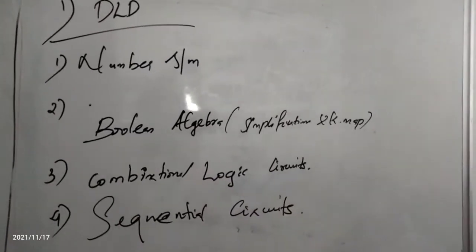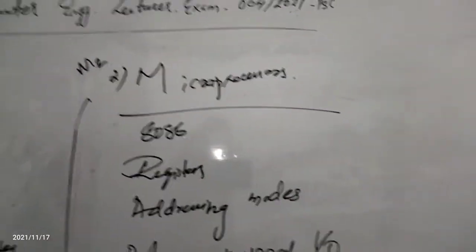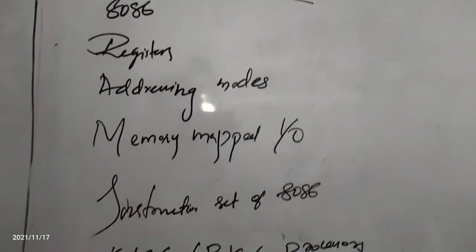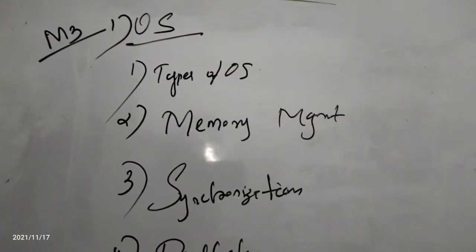Digital logic design includes number systems, Boolean algebra, combinational and sequential logic circuits. Microprocessor covers 8086 registers, addressing modes, memory mapped I/O, and the instruction set of 8086.